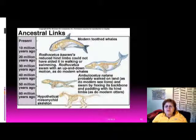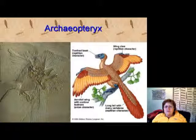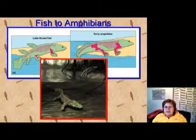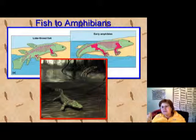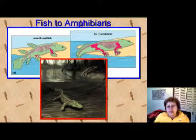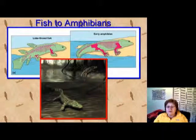These slides show a bunch of transitional forms, like the Archaeopteryx which has both dinosaur-like and bird-like features, fish-to-amphibian transitional forms, and of course horse evolution, which has very many transitional forms. So it's not that we don't have transitional forms — it's just that not every evolutionary lineage has preserved them so far.